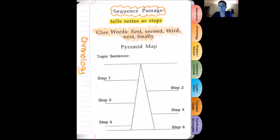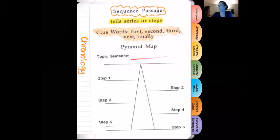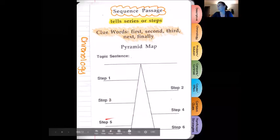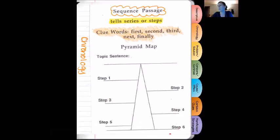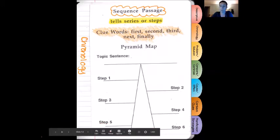At the top of the pyramid map will be the topic sentence, and then we will do the steps going down. And then at the very bottom we will find the clincher, which is what the very last ending result is.